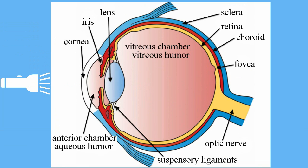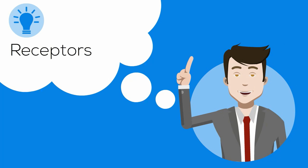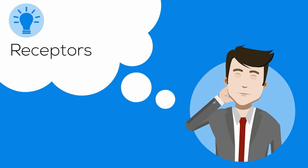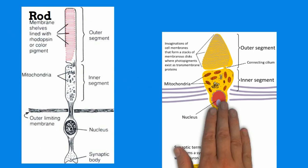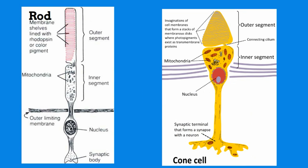After passing through the lens, the focused light passes through a jelly-like fluid and reaches the back of the eye onto a surface called the retina. The retina is filled with tiny receptors which are called rods and cones — there are over 130 million receptor cells.